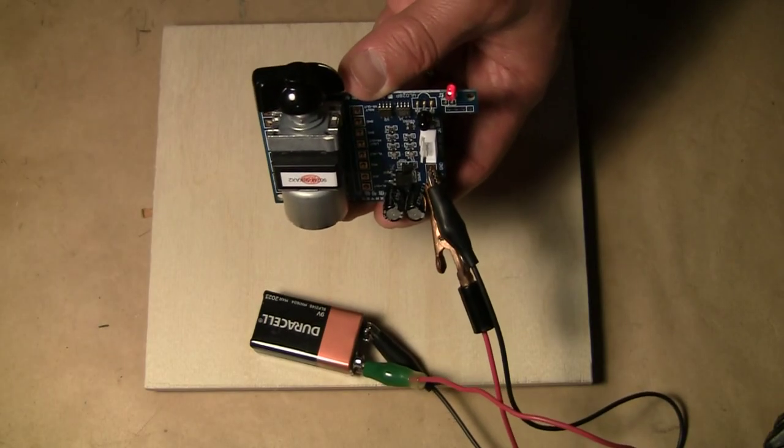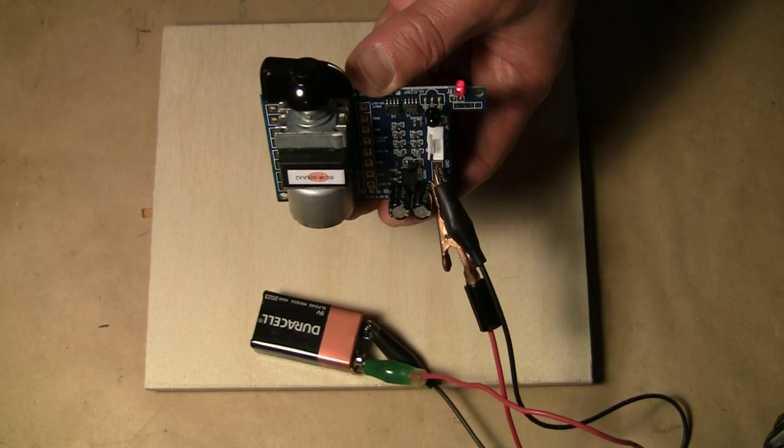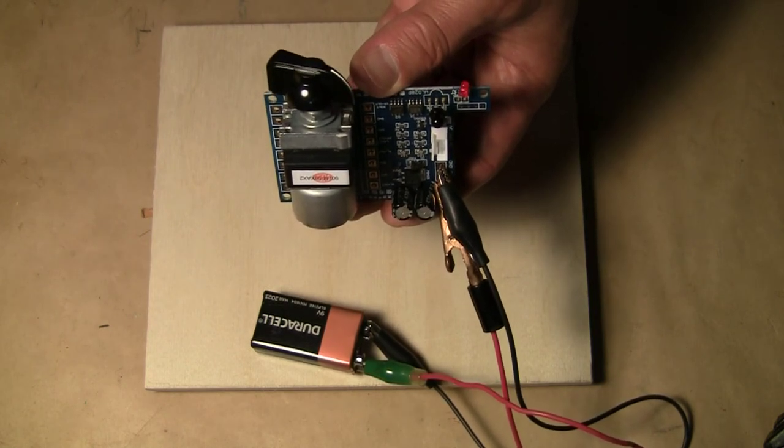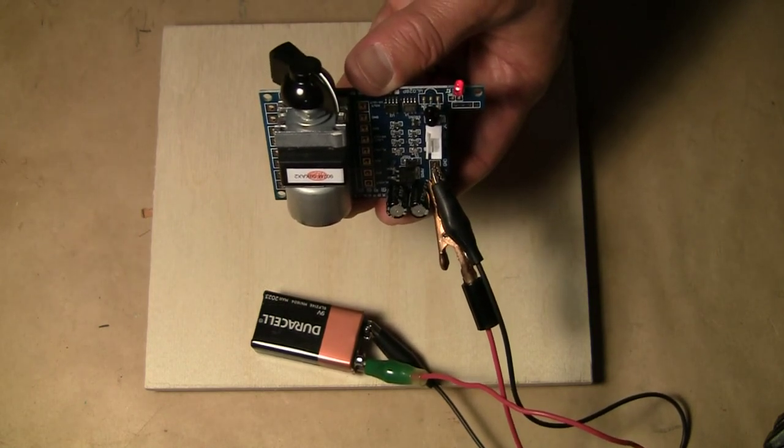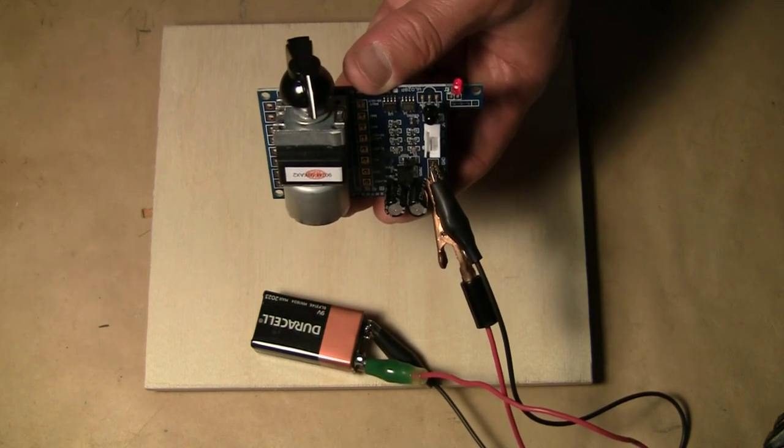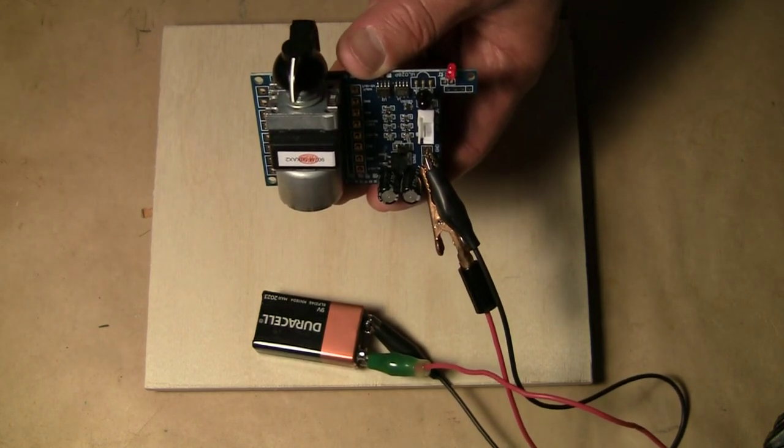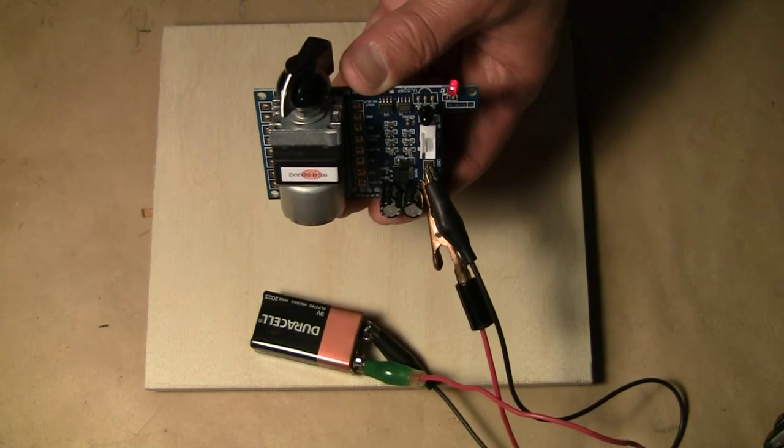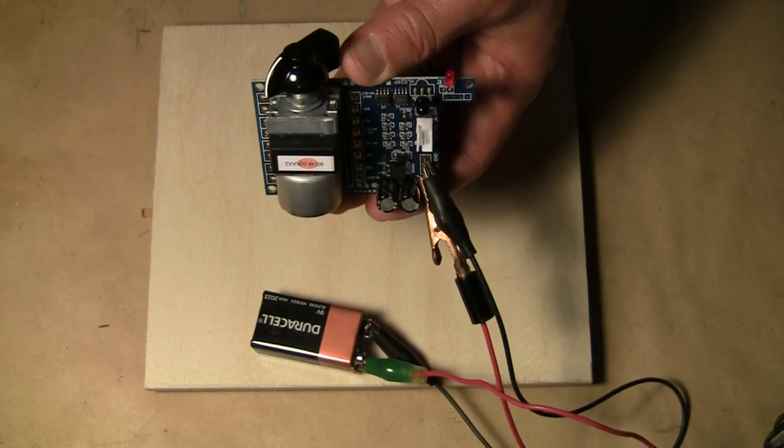I'm pushing the on-off switch now. You can see the LED light is lighting up. And if I press the plus to increase the volume, the volume control is turning clockwise.